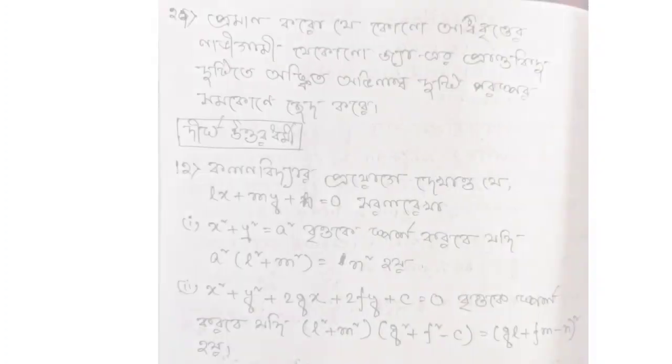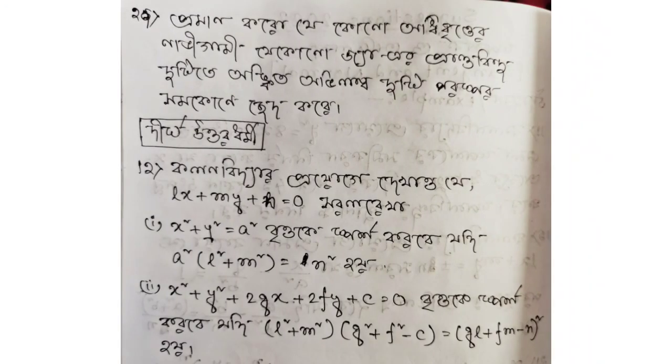Number 39 example: prove that for any point on a hyperbola, the tangent at that point — the two normals at the two ends of the chord drawn — bisect the angle at the foot. Show that they cut equal angles.